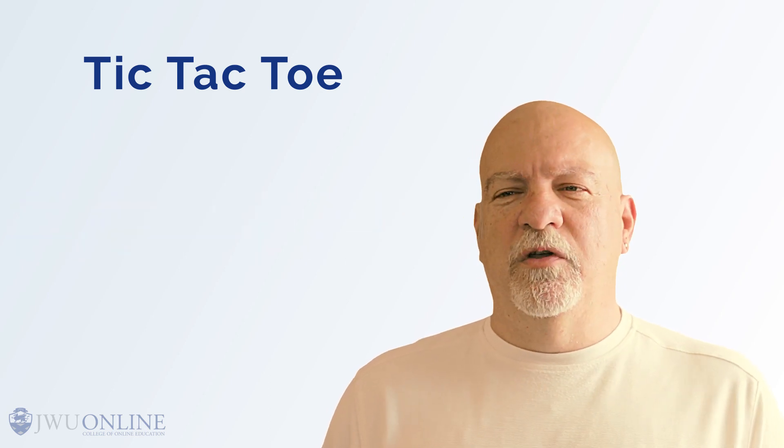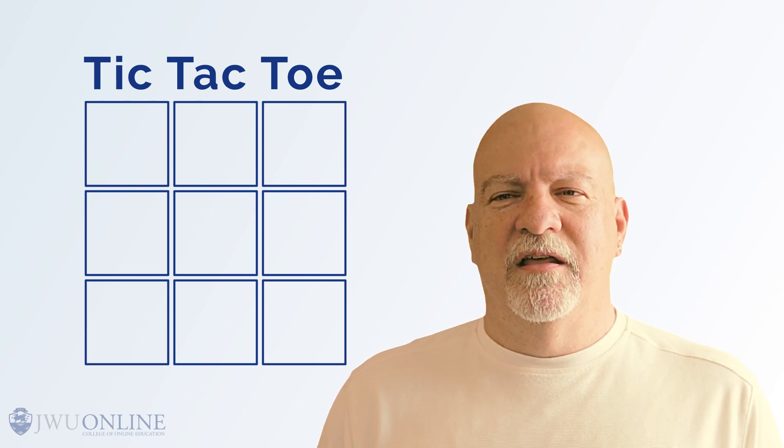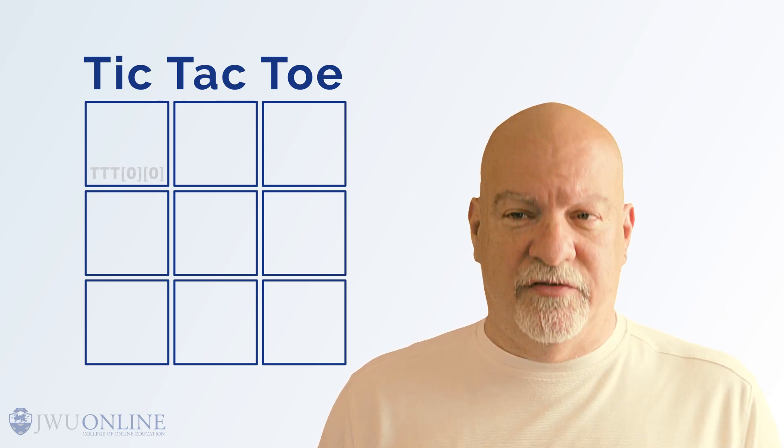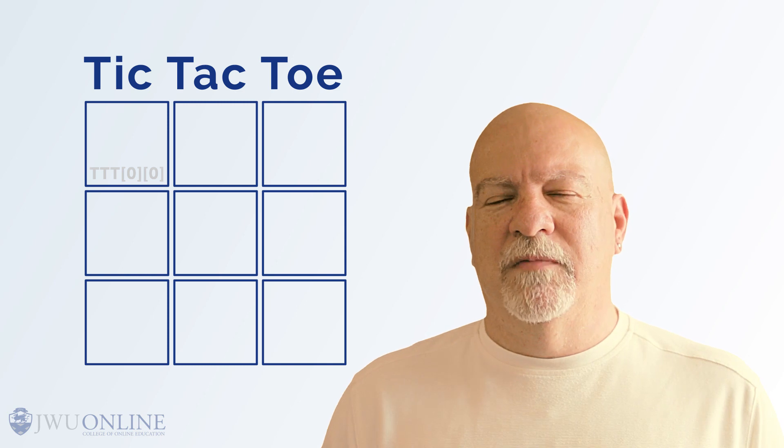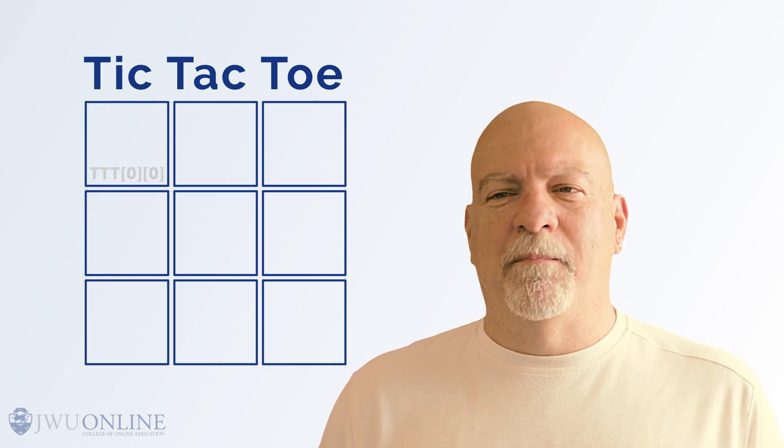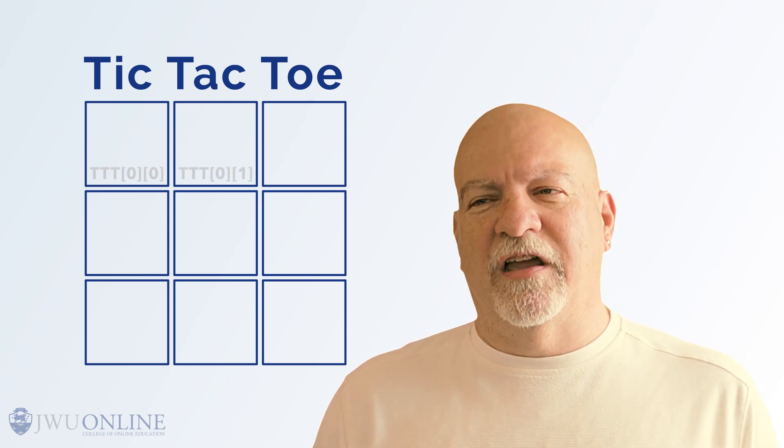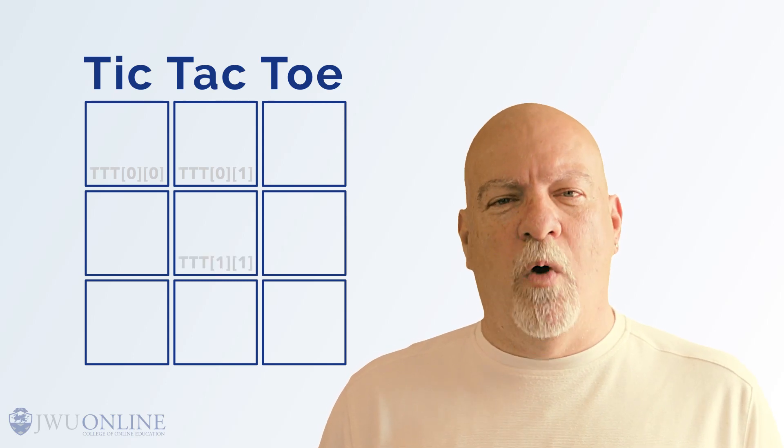So, we will use a row and column system to number the nine boxes. The upper left will be T-T-T 0, 0. This means the first row, first column. Remember the whole zero thing? Next is upper middle, T-T-T 0, 1, meaning first row, second column. The middle of the board is T-T-T 1, 1, and so on.